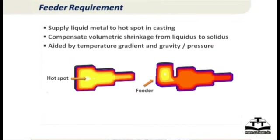We now talk about the second part of volumetric contraction, which is between liquidus and solidus. This is quite significant — it could account for almost half of the total volumetric contraction of a casting. A feeder is one which supplies liquid metal to the hot spot in a casting. The hot spot itself, which is feeding the remaining part of the casting, gets liquid metal while that is solidifying. Therefore, the defect shifts from the hot spot to the feeder, and the feeder is cut off and recycled in the furnace.